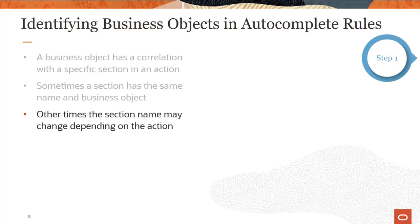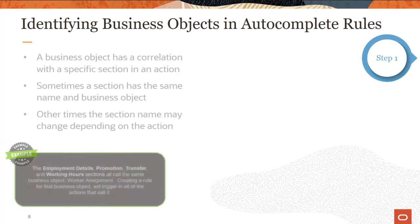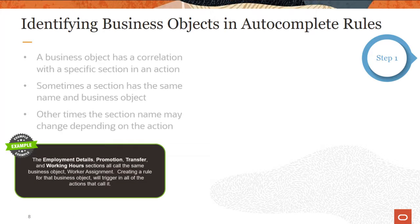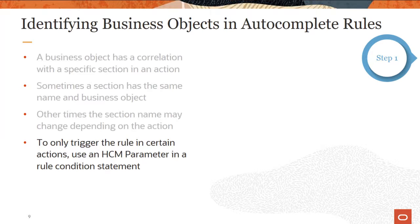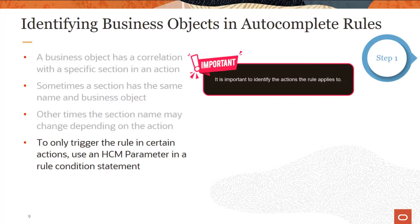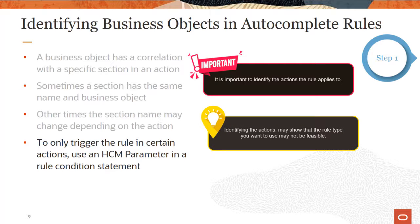Other times, the section name may change depending on the action. For example, the employment details, promotion, transfer, and working hours sections all call the worker assignment business object. If you create a rule for the business object supporting these sections, it will trigger in all of the actions that call that business object. Use an HCM parameter in a rule condition statement to only trigger the rule in certain actions. It is important to identify the actions the rule applies to, as you may learn that the rule type you want to use may not be feasible.